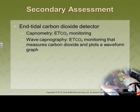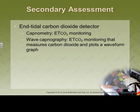Normal CO2 levels are 35 to 45. One of the key findings from research on cardiac arrest management is that one of the best indicators for effective compressions is return of CO2, because that's going to tell you that you're having oxygenation take place.